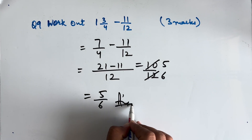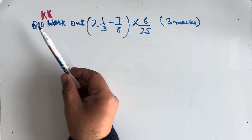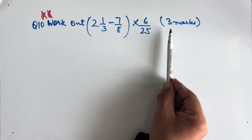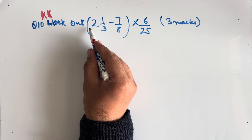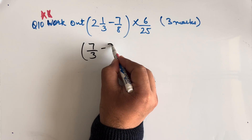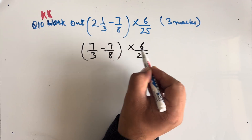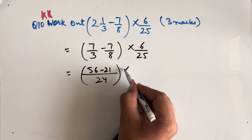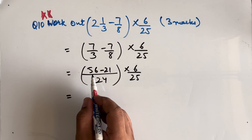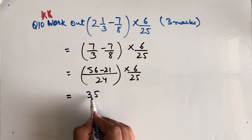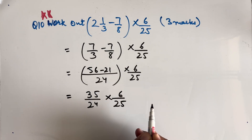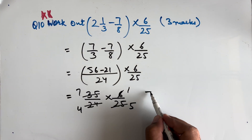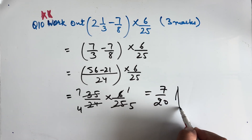Question 10: Work out (2 and 1/3 minus 7/8) × 6/25. This is a 3-mark question and a very important type. 2 and 1/3 becomes 7/3. Taking LCM of 24 for the bracket: 56/24 minus 21/24 = 35/24. Then 35/24 × 6/25: cancelling 6 and 24, and 5 and 35, we get 7/20 as our final answer.